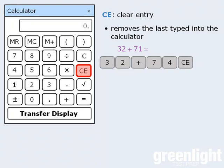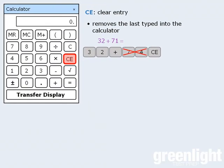or you can click the clear entry button, which essentially erases your last entry but keeps everything before that last entry. So the calculator still remembers that you entered 32 plus, and it's now waiting for your next entry. So if you now enter 71 and press equals, you'll see that the correct sum is 103.